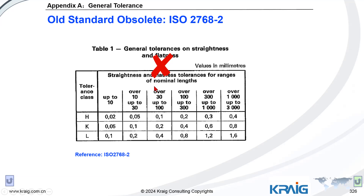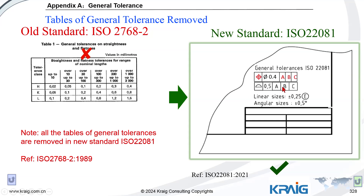That's why this table has been removed from the new standard — it's useless. In the new standard you cannot find any such table. But we still need general tolerance. We can't put every tiny tolerance in the drawing; it's time-consuming and unnecessary. So how do we handle general tolerance now?